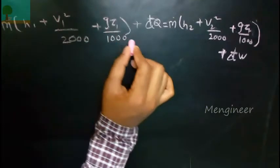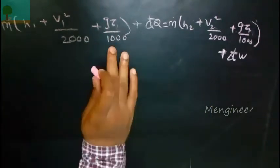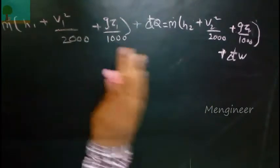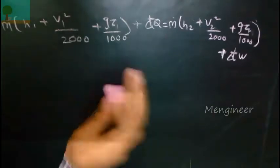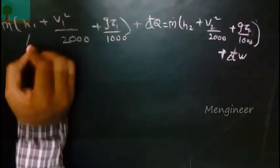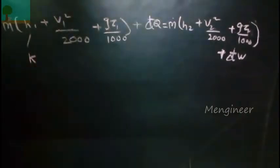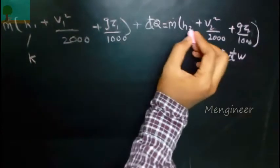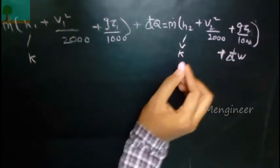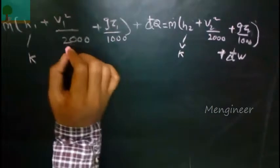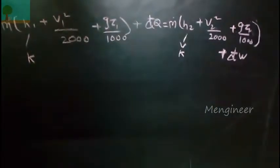This is the equation that we have derived for steady flow energy equation. Always remember this equation for solving problems - it will be helpful for you. We want to substitute the enthalpy value in this equation only in kilojoule per kg.